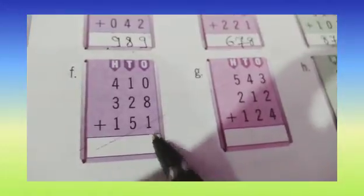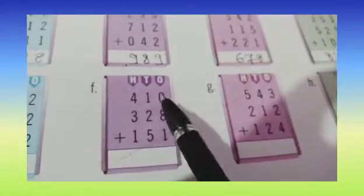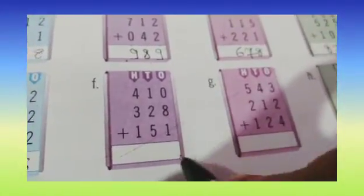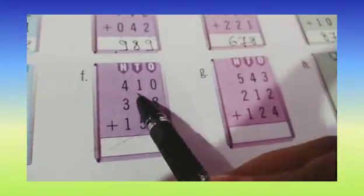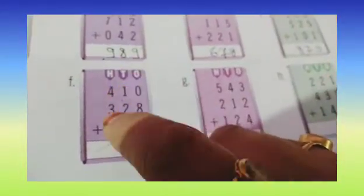Now the next part is part F: 0 plus 8 plus 1, 1 plus 2 plus 5, 4 plus 3 plus 1. So 0 plus 8 is 8, and 8 plus 1 is 9. Now 1 plus 2 is 3, and 3 plus 5 — start counting after 3: 4, 5, 6, 7 and 8. So 3 plus 5 is 8. Now 4 plus 3: after 4 start counting 5, 6 and 7. 7 plus 1 is 8. So we are writing 8. So our answer is 889.